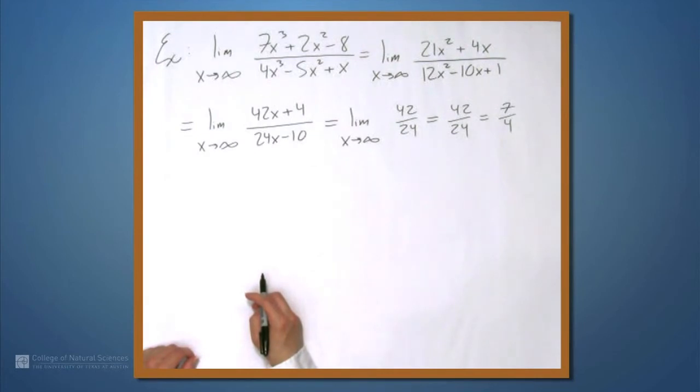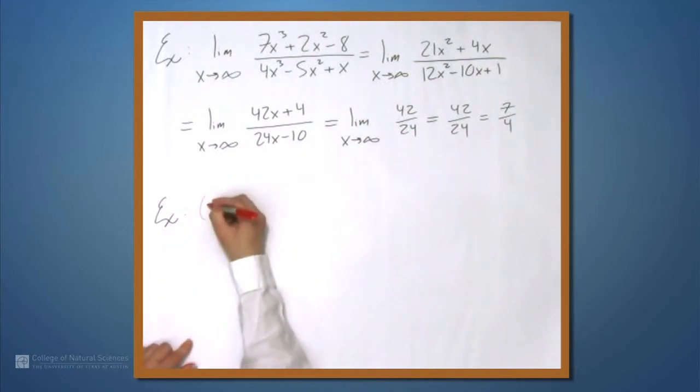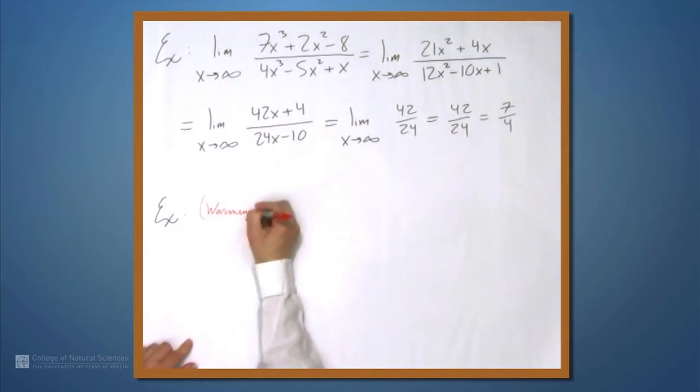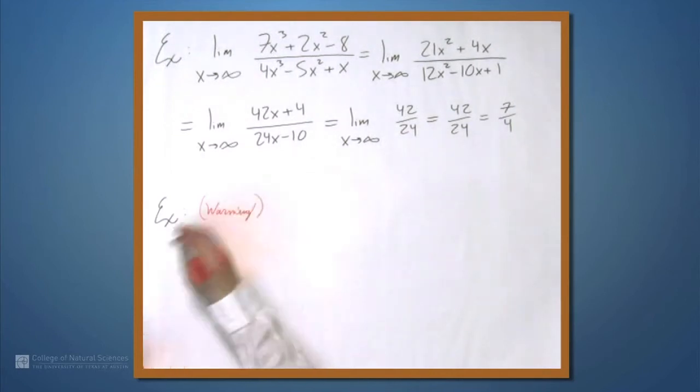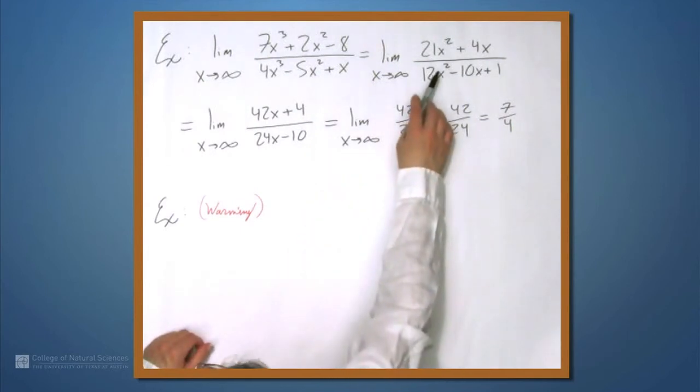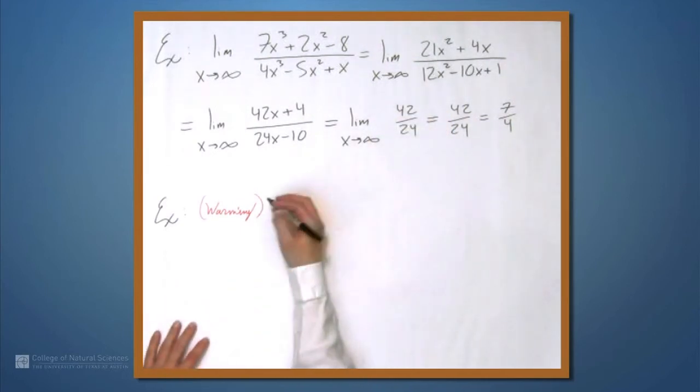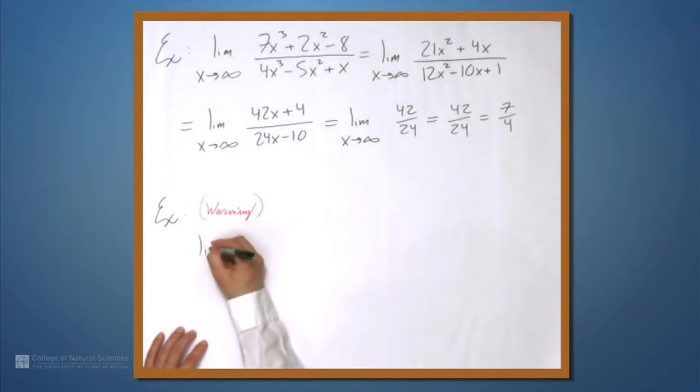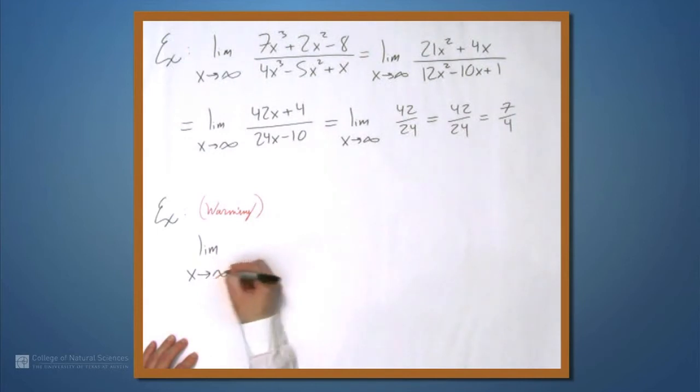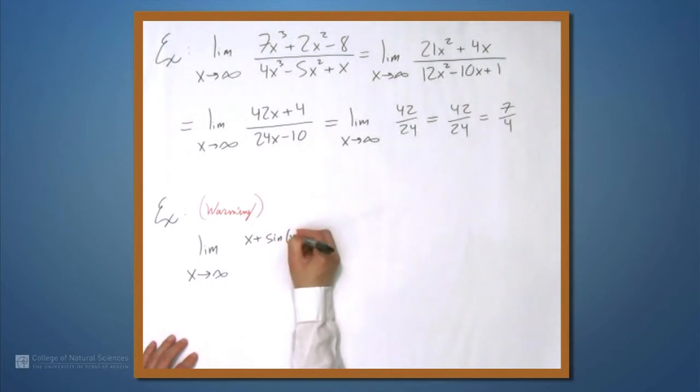So, those are two examples of L'Hopital's rule, but I want to give you a third one as a warning. So, as I said, the limit of the derivatives, the ratio of the derivatives needs to exist. And let's see why. So, let's look at the example.